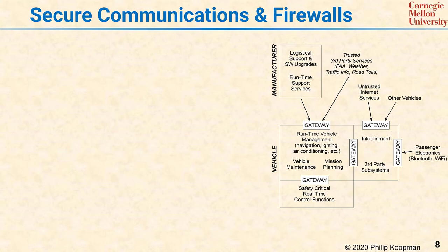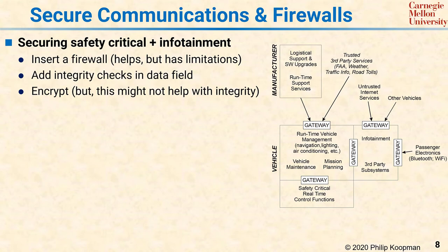Mitigating this kind of risk requires a lot of attention to detail and many different types of mechanisms. For example, you can insert a firewall at each gateway to restrict the type of traffic that can get through. You probably also want to add integrity checks on data fields and use some sort of cryptographic support to make sure that the passenger electronics cannot forge a message that goes directly to the flight controls. You can encrypt, but it's probably better to use digital signatures and other authentication mechanisms. The catch is that ultimately everything is connected to everything, so you have to pay a lot of attention to security.